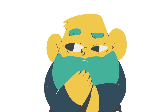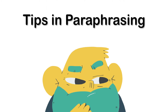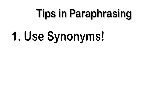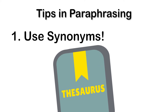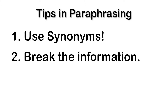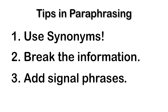Now, if you're still having a hard time paraphrasing, here are some quick tips that might help you out. Number 1: Use synonyms — you can use a thesaurus to look up synonyms of different terms. Number 2: You can break the information into separate sentences. And lastly, you may add signal phrases. This is when we add and mention the author in the beginning of the sentence.